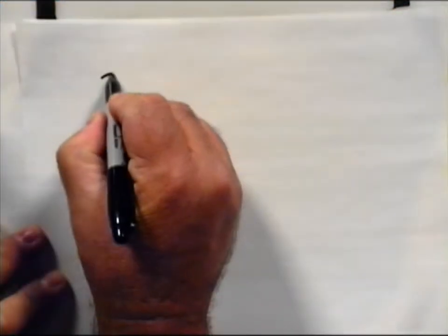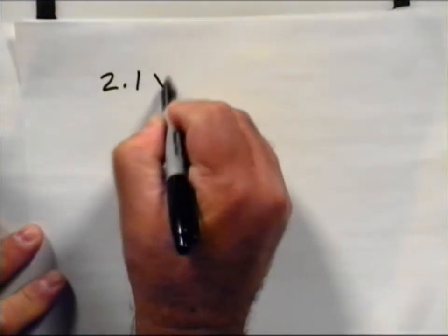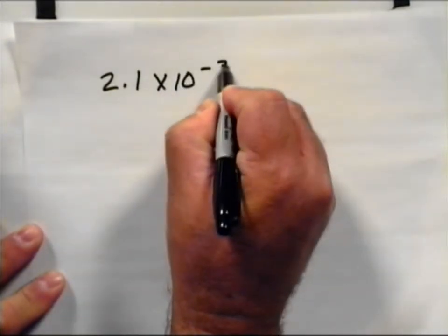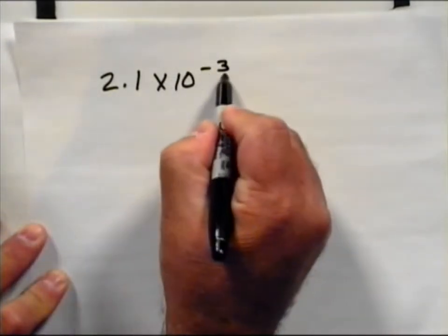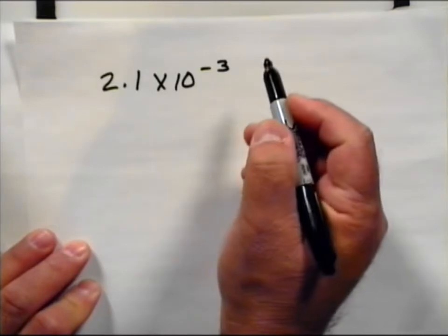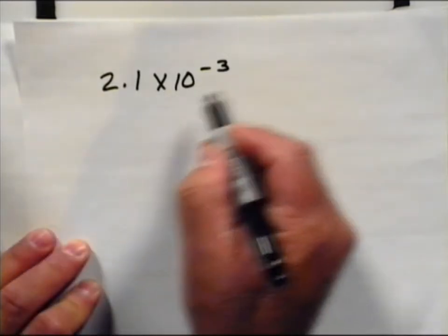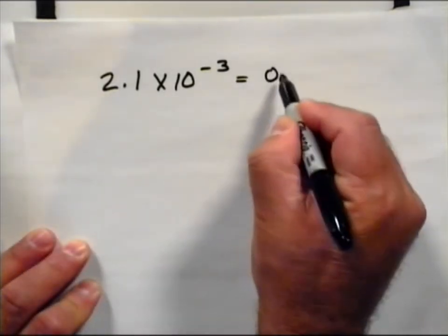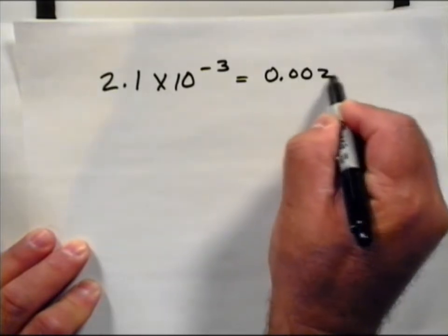For example, if I gave you a number 2.1 times 10 to the minus third, since it's a negative number we know that it's going to be a number between 0 and 1, and in this case it's 0.0021.